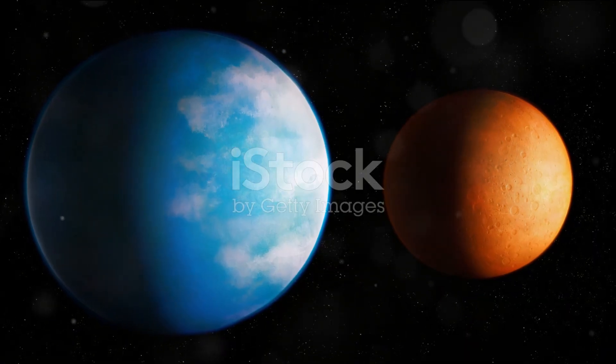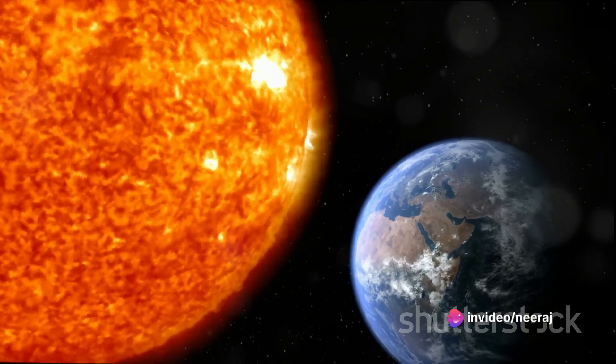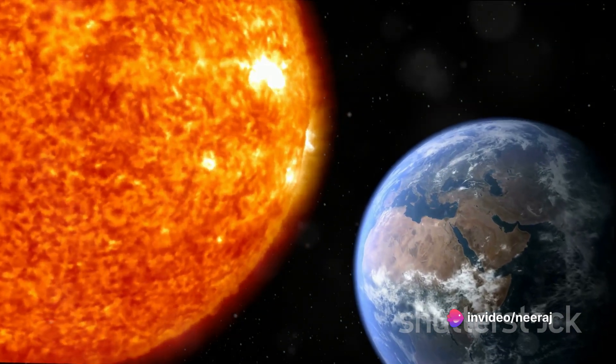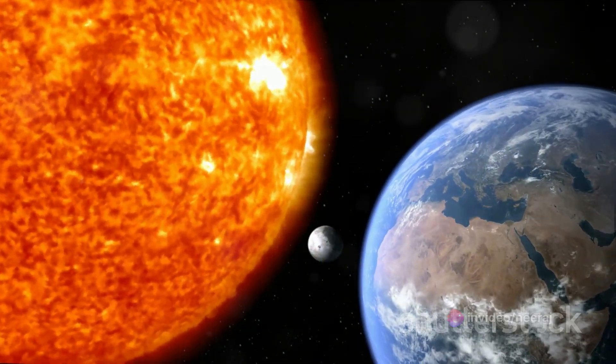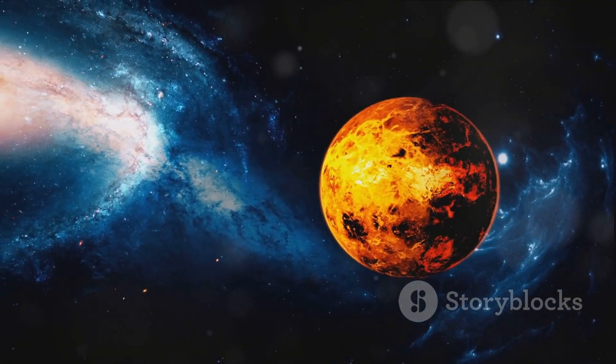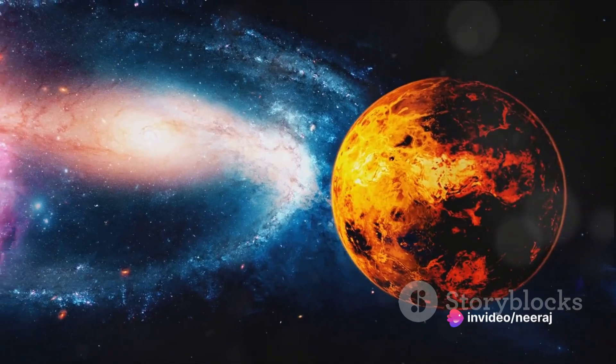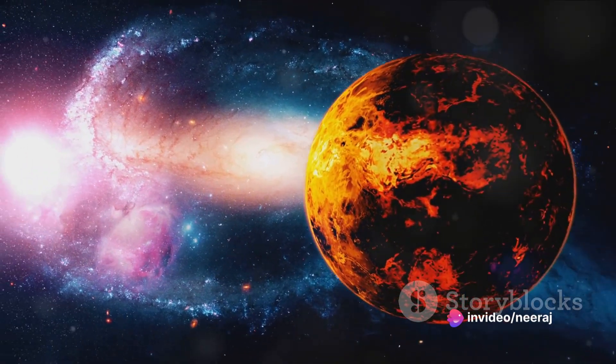Firstly, Earth and Venus are almost identical in size, with Venus having about 95% of Earth's diameter. They're so close in size that they're often referred to as planetary siblings. In terms of mass too, Venus isn't far off. It has about 80% of Earth's mass, which makes it the closest match to our planet in the entire solar system.